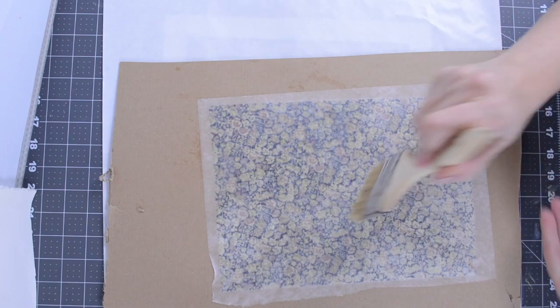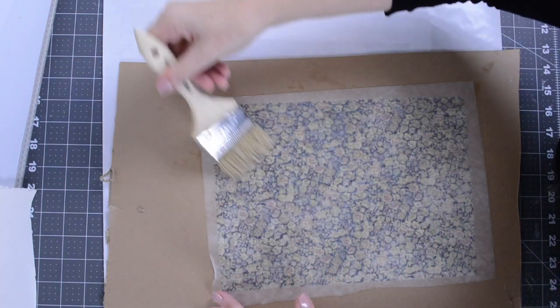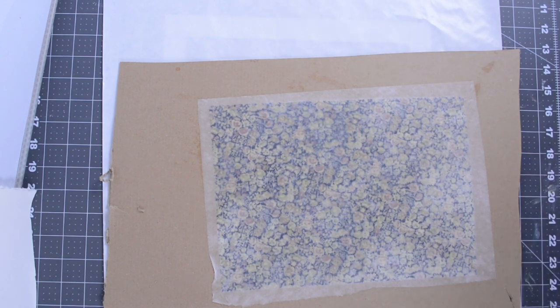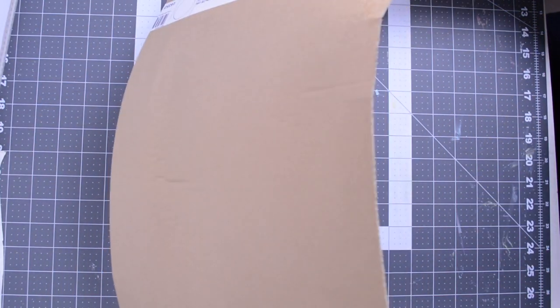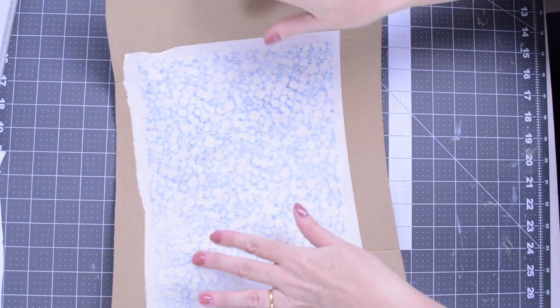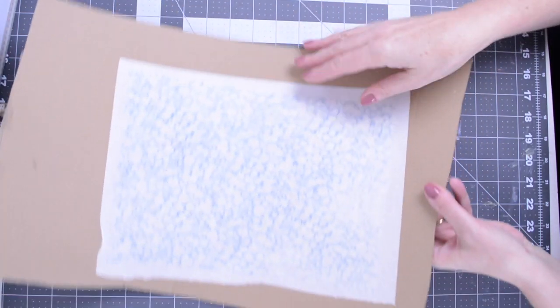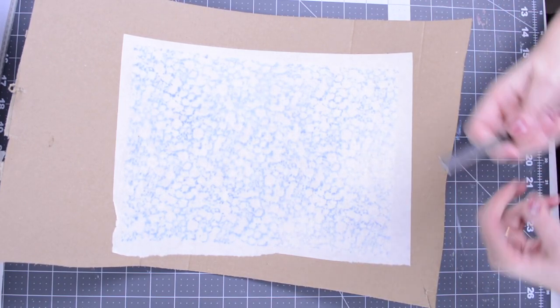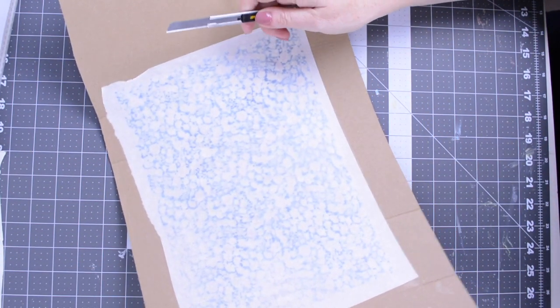Then you're going to allow this to dry overnight. And in the morning you'll notice that the cardboard has bowed slightly from the moisture in the glue. Just double check that it's dry—if it's cool to the touch, it's still wet.